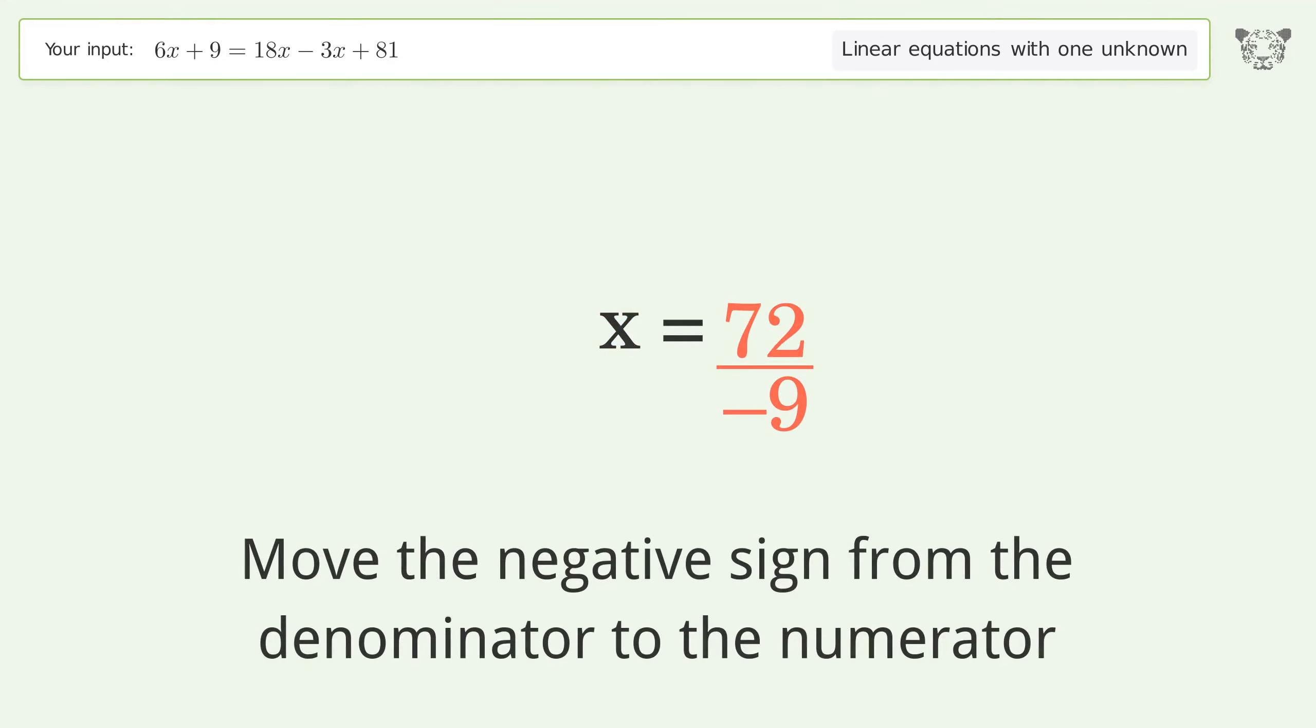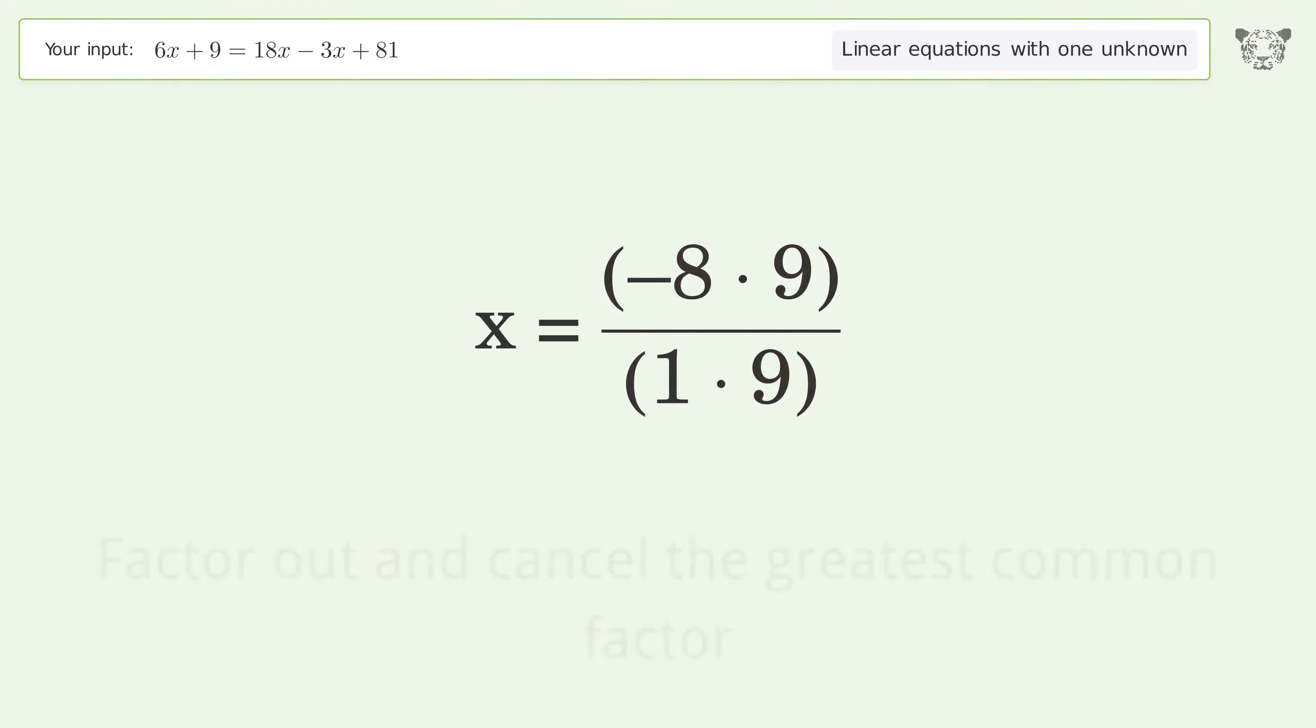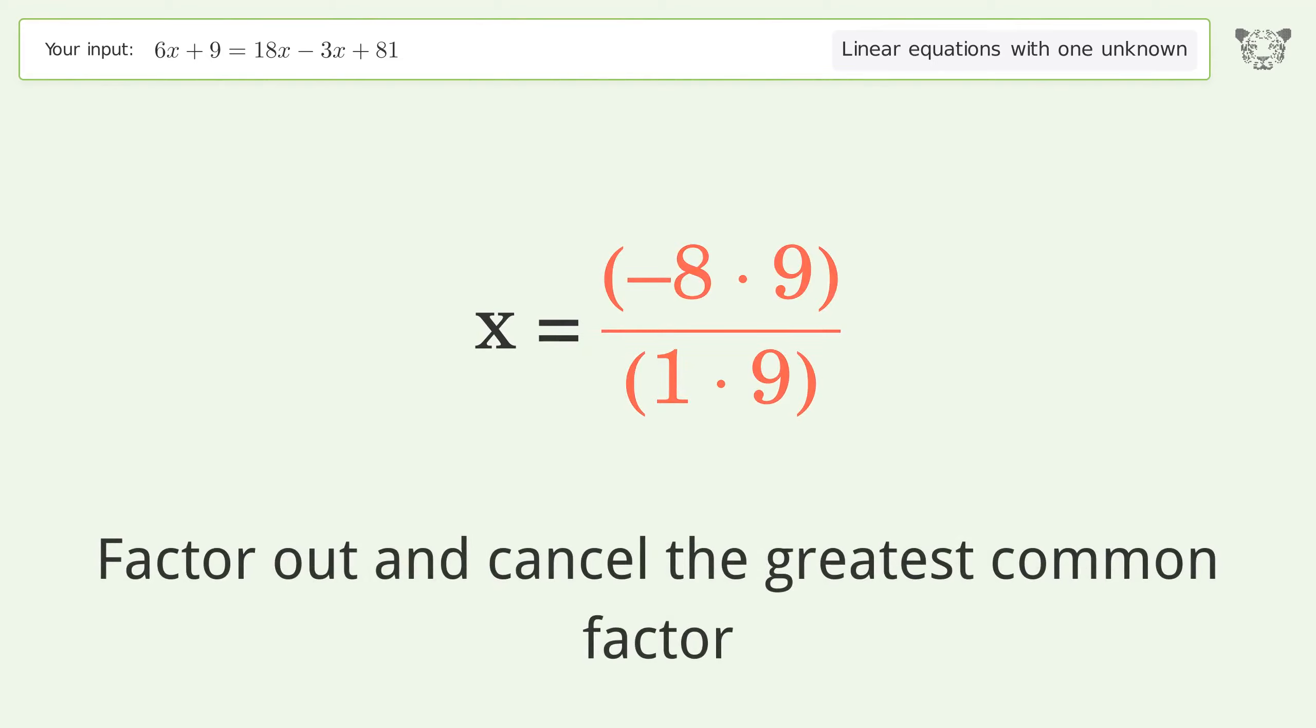Move the negative sign from the denominator to the numerator. Find the greatest common factor of the numerator and denominator. Factor out and cancel the greatest common factor.